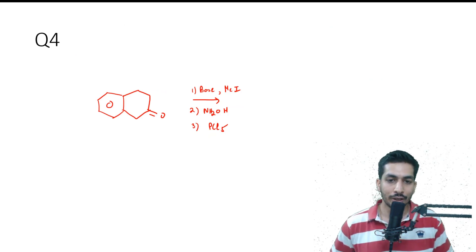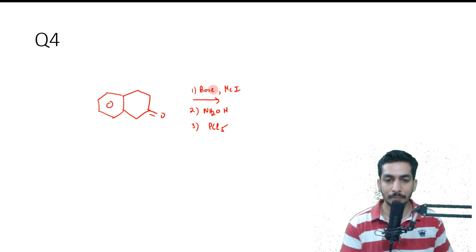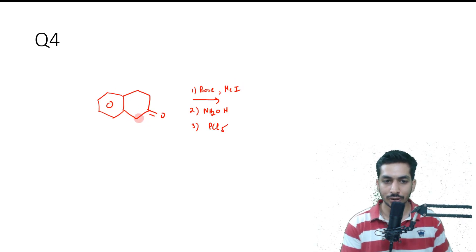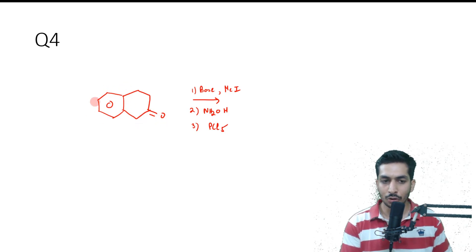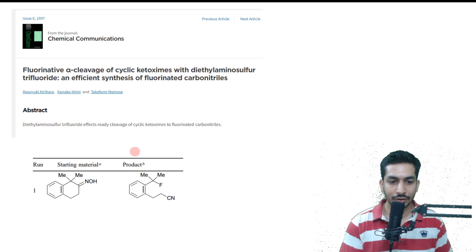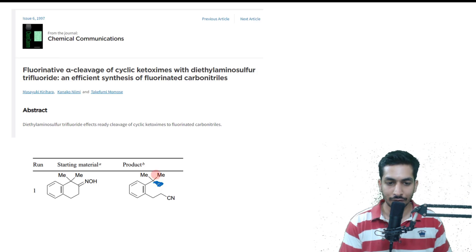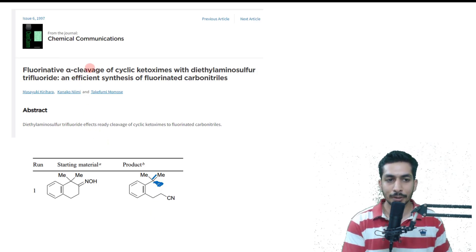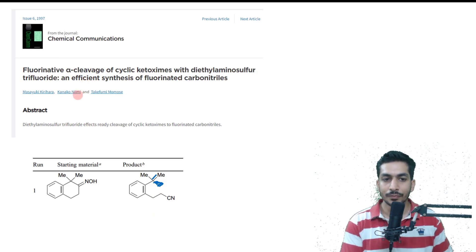The next question was interesting. First, you are adding some base and two equivalents of methyl iodide. This position is the most acidic because the carbanion generated will be stabilized due to conjugation with the ketone and also with the phenyl ring. So two methyl groups are attached. Then an oxime is added, leading to imine generation, and then PCl₅ does the dehydration. In the reference, a fluoro group appears, but in our question that fluoro is not going to be there — instead a double bond will be present.